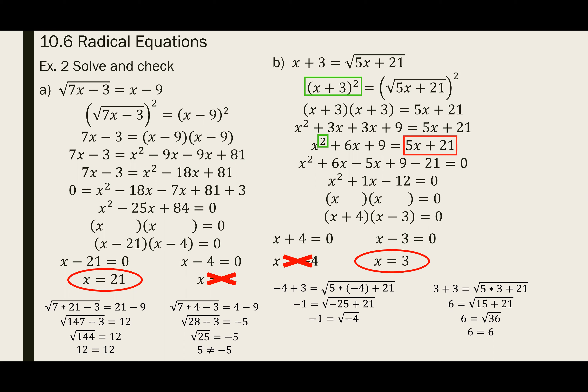Yes, it's a long process: square them up, FOIL them out, combine like terms, factor them out, set equal to zero, solve it — and after that you still have to verify which of the two answers is correct. Sometimes both answers will work out, so you always have to check your answer.